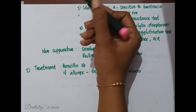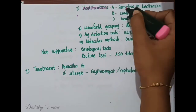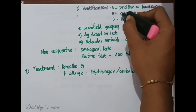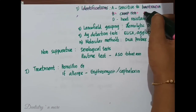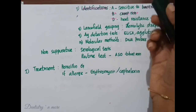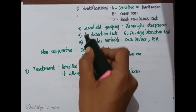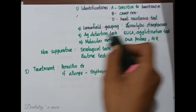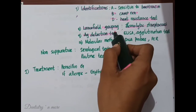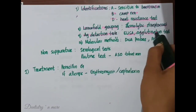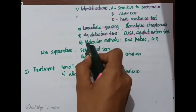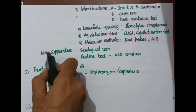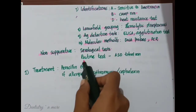For identification of various groups: group A Streptococci are more sensitive to bacitracin; group B Streptococci are identified by the CAMP reaction (Christie, Atkins, and Munch-Petersen reaction); group D can be isolated by performing a heat resistance test. Lancefield grouping serologically classifies hemolytic Streptococci. Antigen detection tests including ELISA and agglutination tests are used to demonstrate group A Streptococcal antigen from throat swabs. Molecular methods include DNA probes and polymerase chain reaction (PCR).